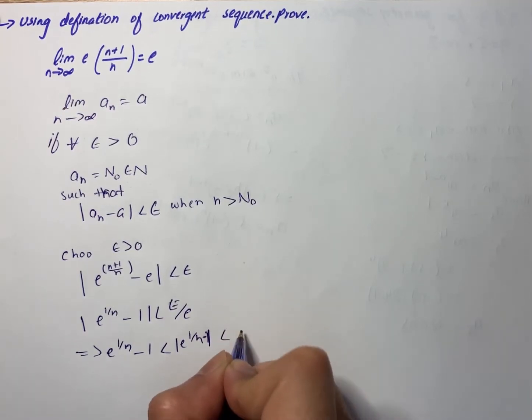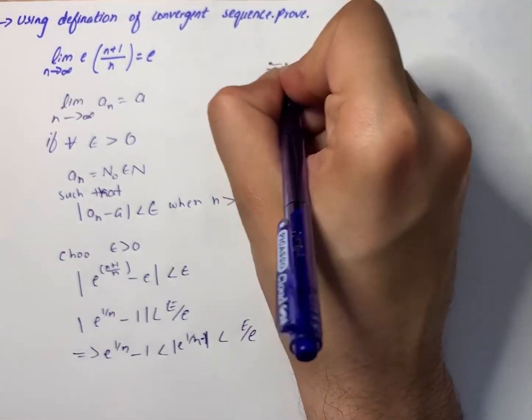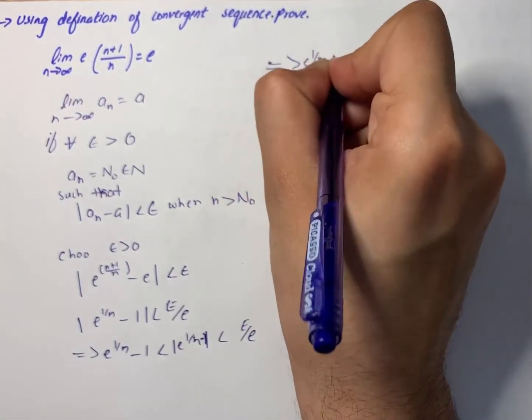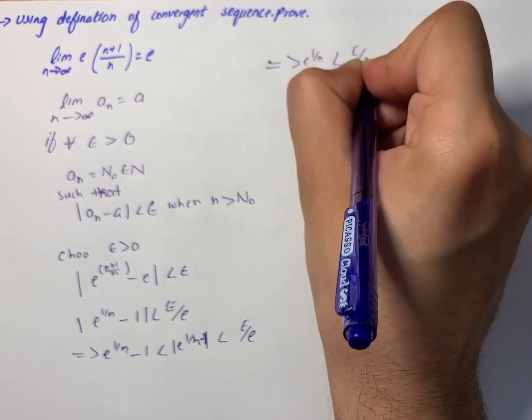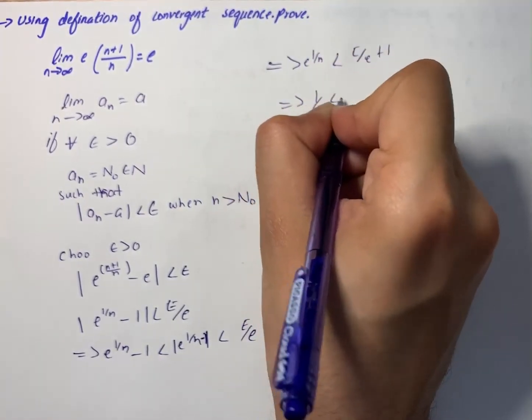We can write in the next step that e^(1/n) is less than epsilon/e plus 1. So we have 1/n less than natural log of epsilon/e plus 1.